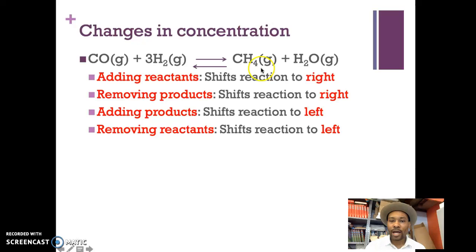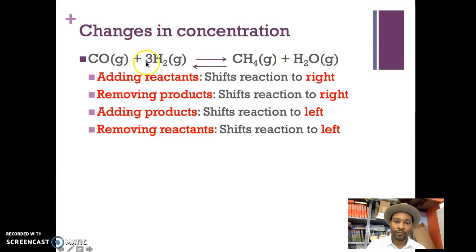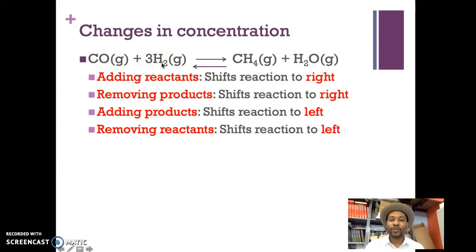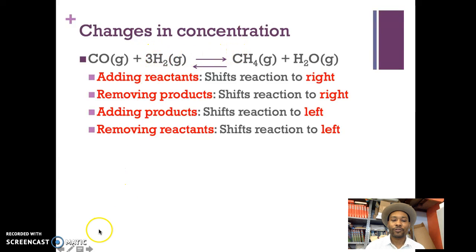If I add products — the methane and the water — adding more of these is going to shift the reaction to the left. If I remove reactants, removing carbon monoxide and hydrogen will force the reaction to shift to the left as well, because the system wants to replace them.